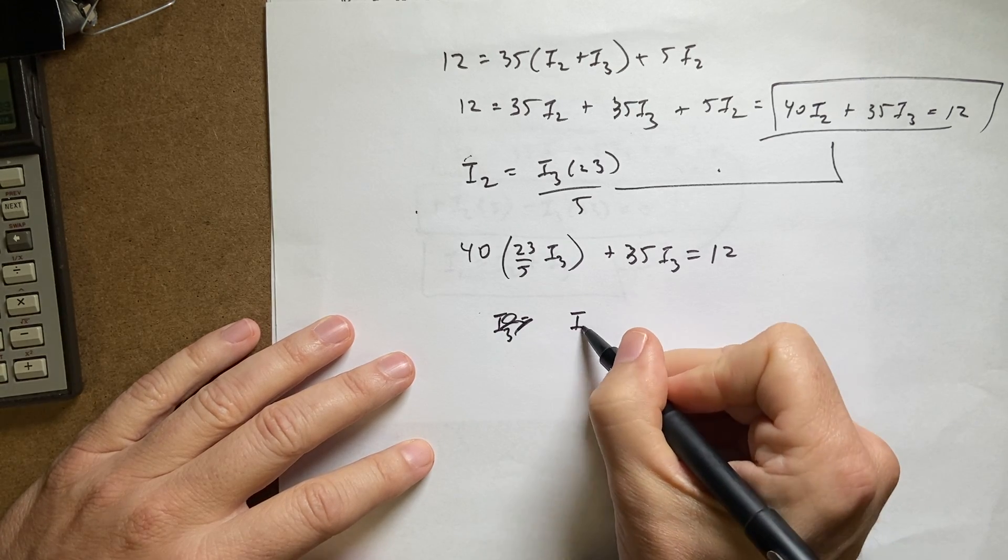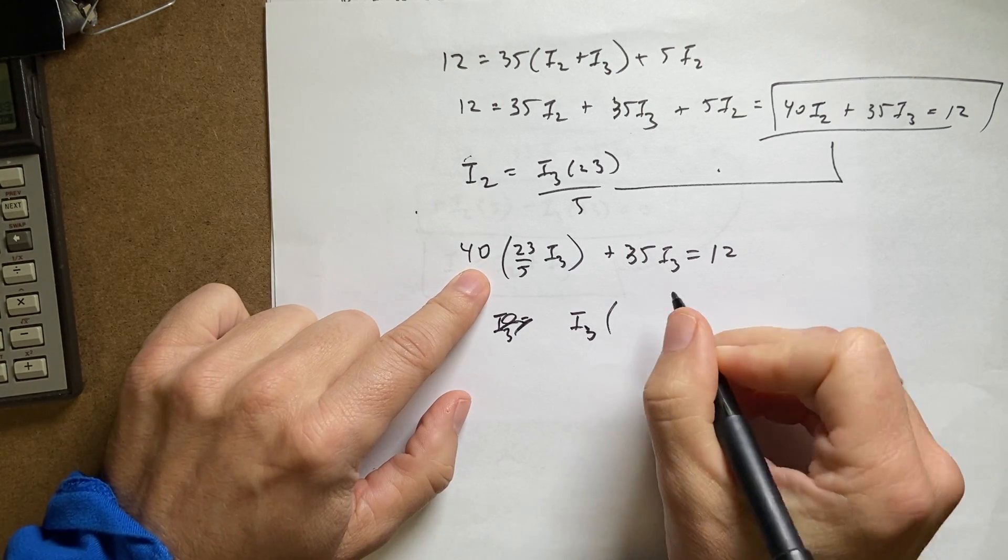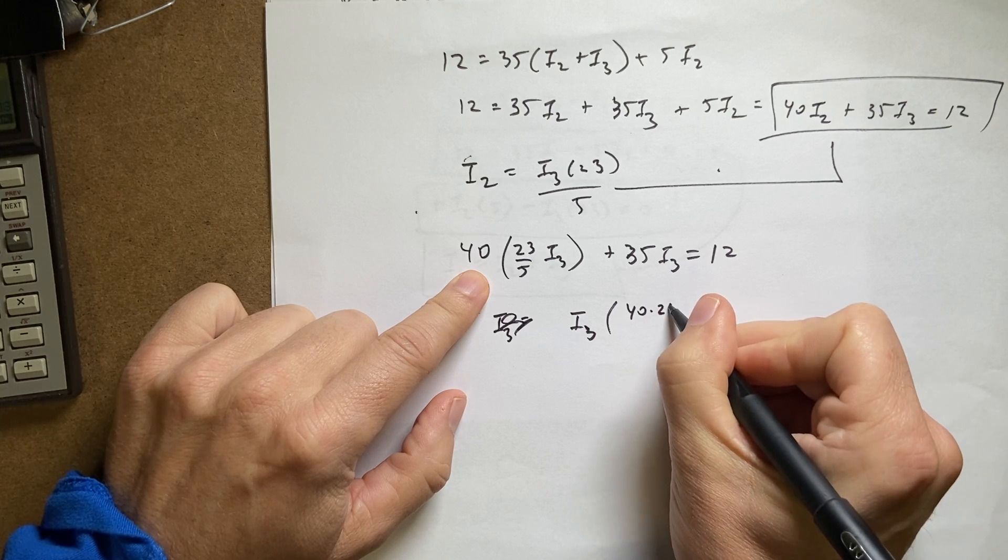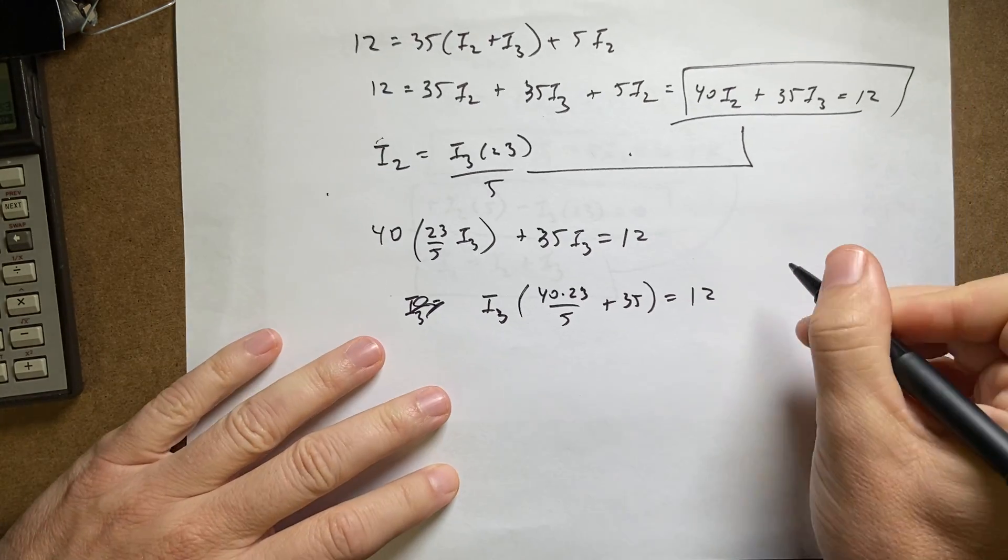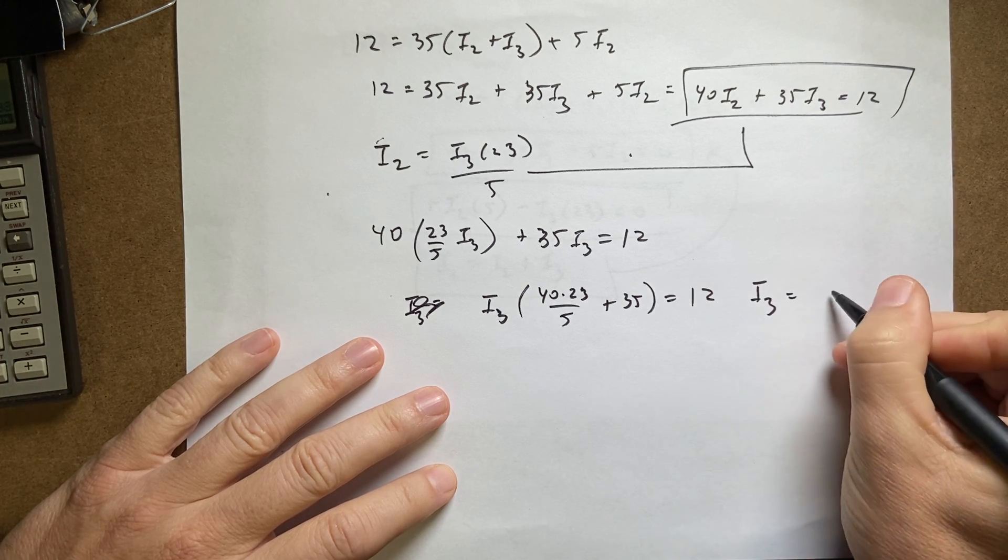Now i3 times 40 times 23 over 5 plus 35 equals 12, so i3 is going to be equal to 12 over 40 times 23 over 5 plus 35.